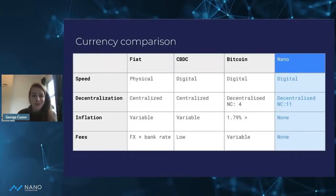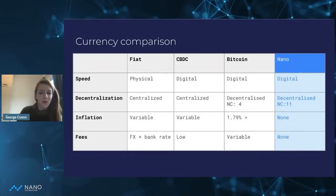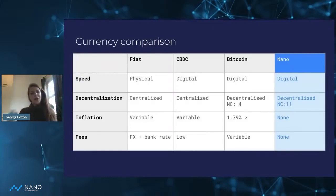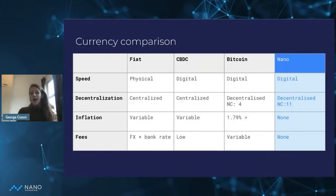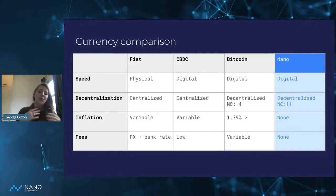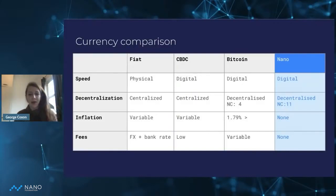You can see here there is a point saying NC4 and NC11 on Bitcoin and Nano. This is the Nakamoto coefficient, which is a measure of decentralization — how many different entities would it take to take over the power of the network.